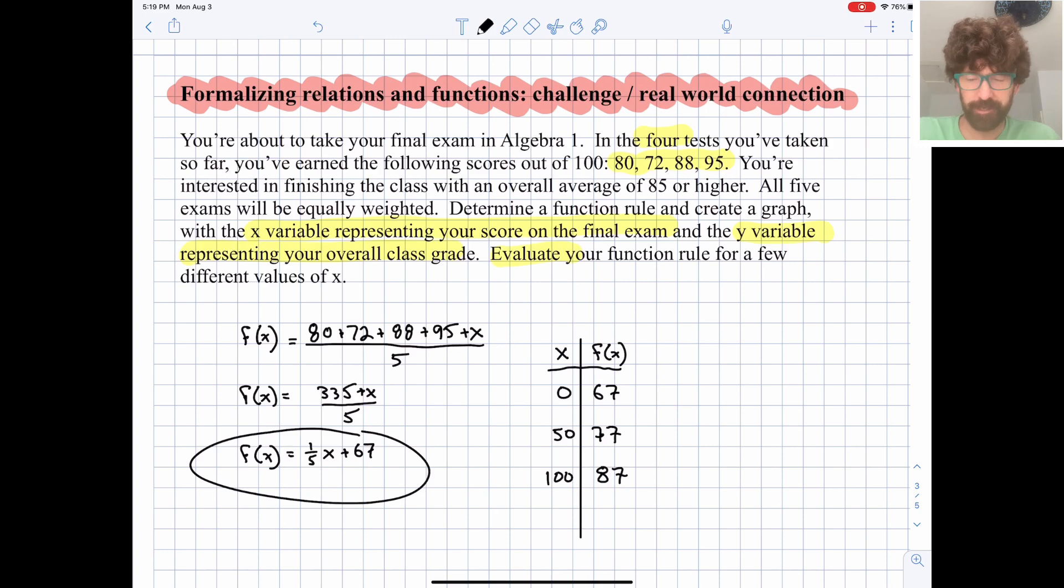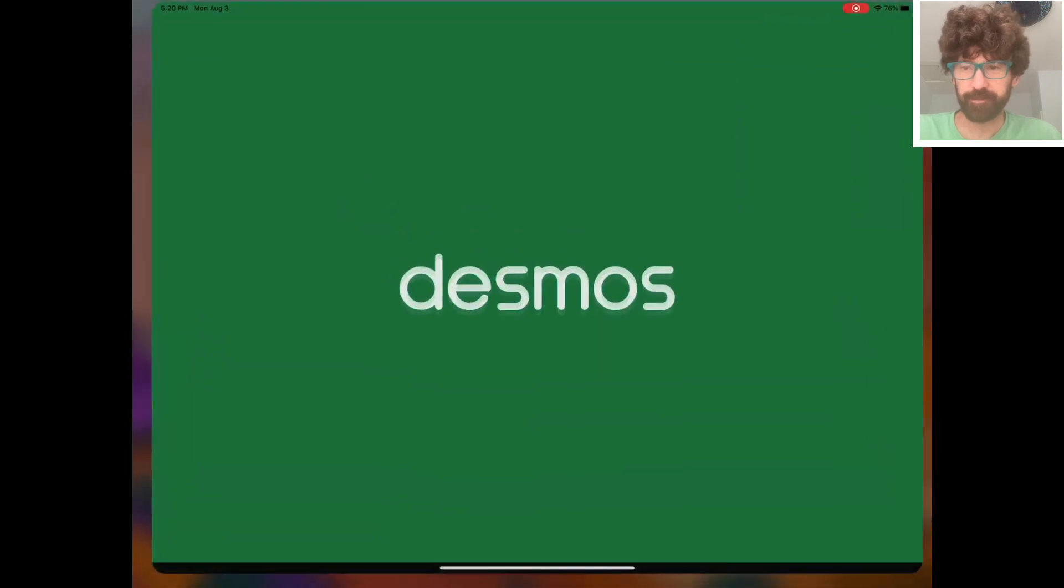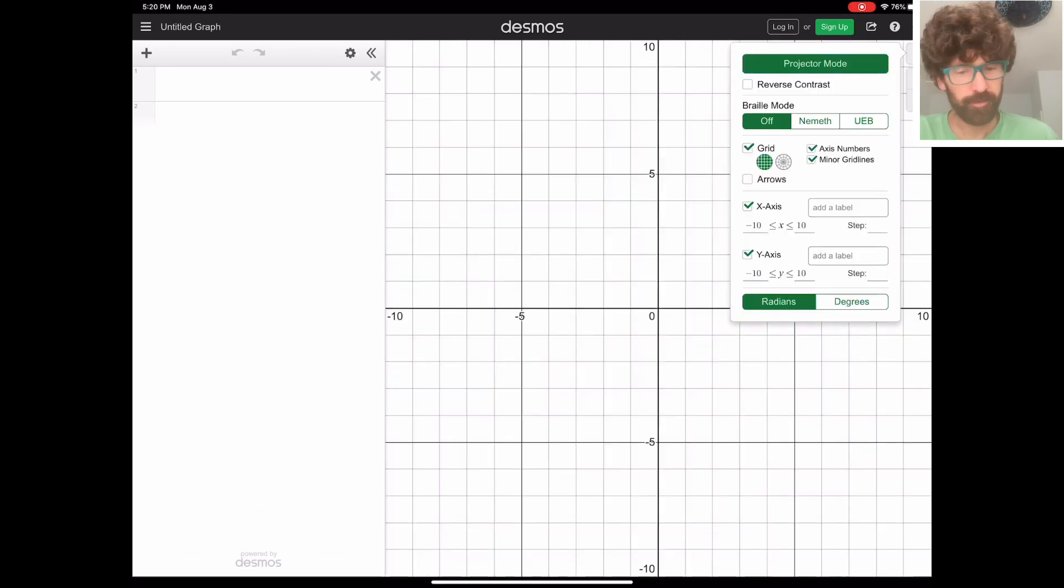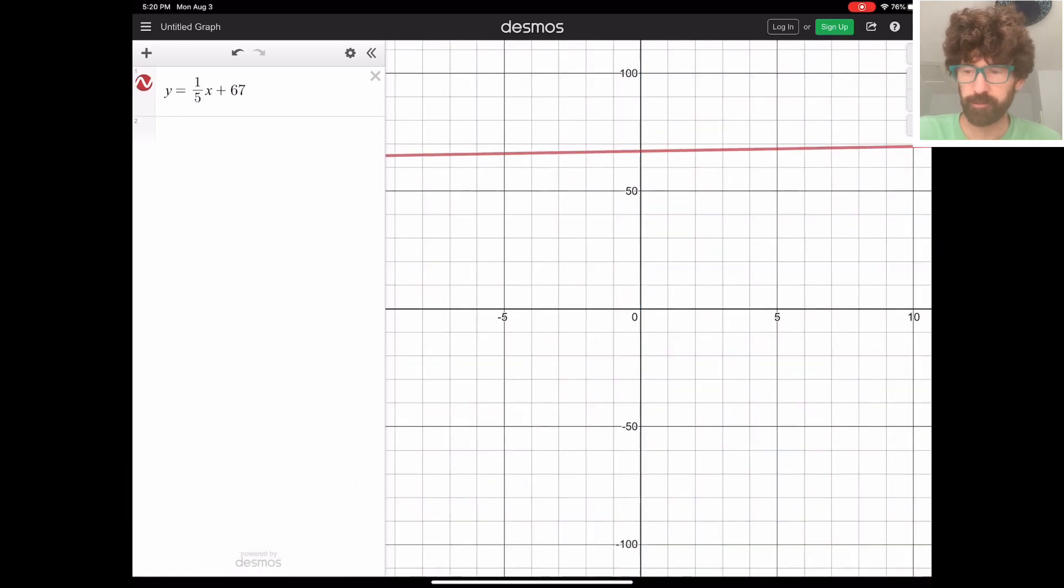Let's go ahead and go to Desmos real quick and graph that up. Okay, so we have, what was it? It was y, or f of x. Desmos can take both or either. y equals one-fifth x plus 67. So let's zoom out a little bit here.